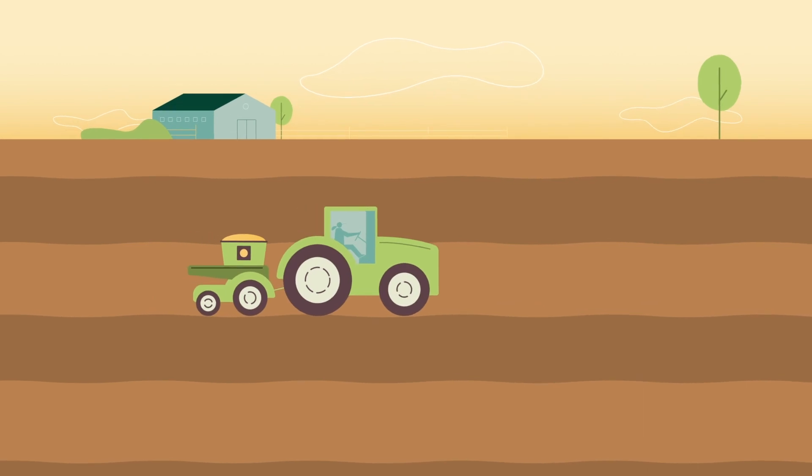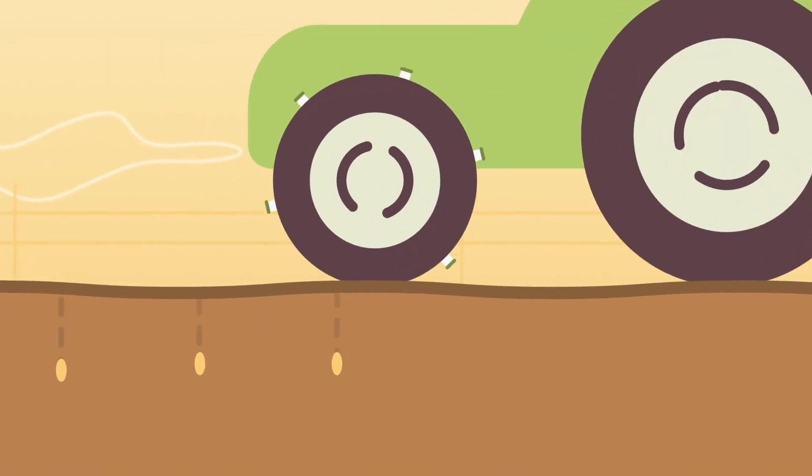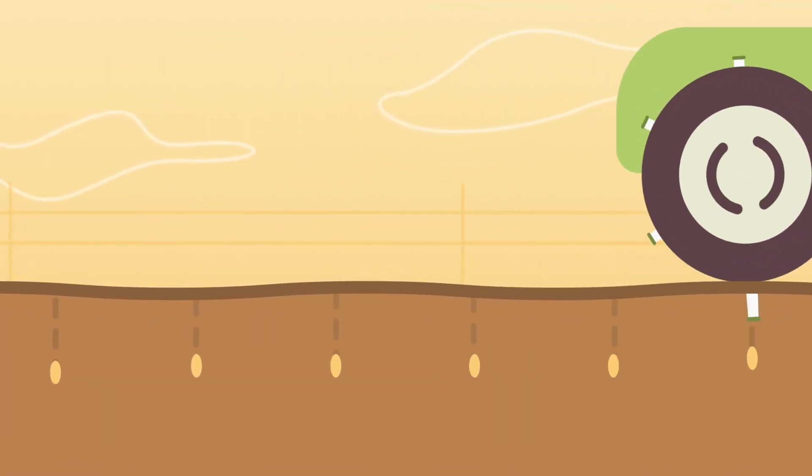In the spring, after preparing the soil, the farmer will then plant each soybean seed roughly an inch deep in the ground.